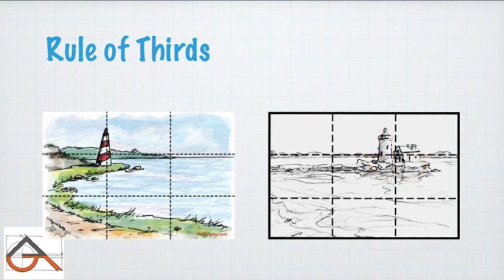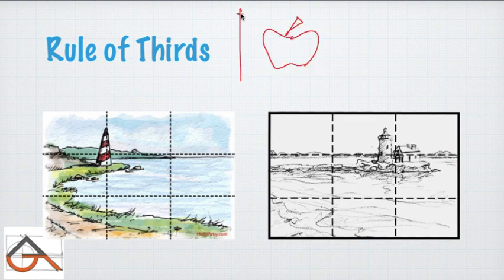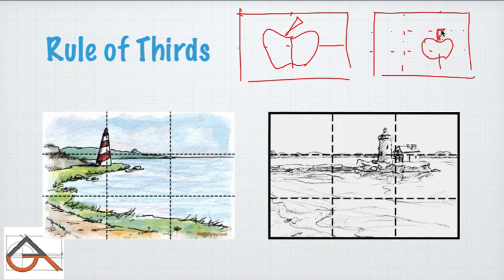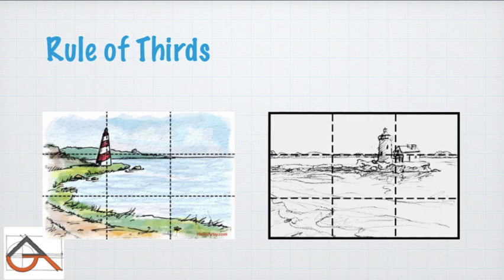For example, if you make an apple centered on the canvas, it is not preferable because it is center-oriented. Instead, divide the canvas using the rule-of-thirds lines and place the apple near one of the intersection points. It will look more balanced and visually interesting. The rule of thirds can be used in this way.